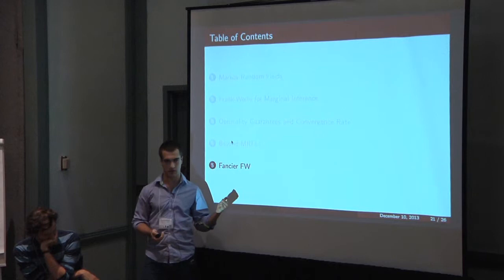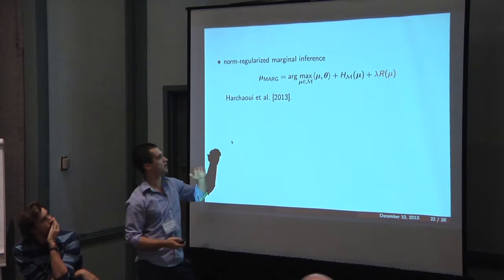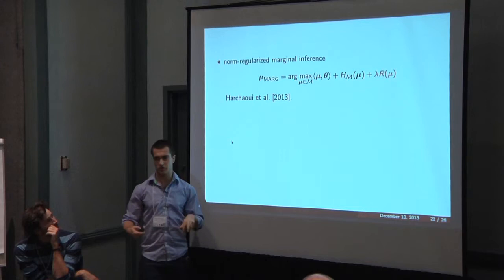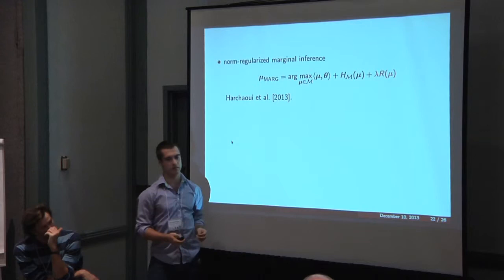Another thing is that there's been a lot of fancier Frank-Wolf proposed than what I used here. So one future direction would be thinking about how you could special case that to graphical models. There's been a lot of nice work recently including this one on norm penalized conditional gradient. This idea of regularized marginal inference actually makes sense in some applications where you want to penalize your marginals to not be too spiky or something like that.